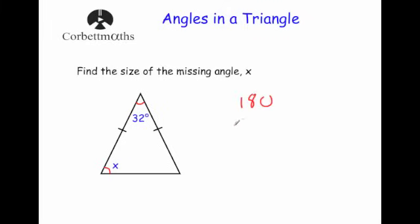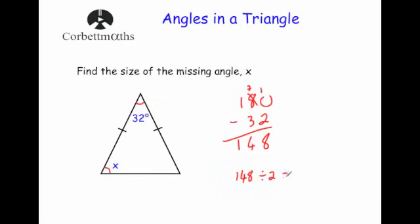So I do 180 take away 32. Zero take away two — I need to borrow: 10 take away 2 is 8, 7 take away 3 is 4, 1 take away 0 is 1 — giving me 148 degrees for both base angles combined. Because they're equal, I halve 148: 148 divided by 2 equals 74 degrees. So X equals 74 degrees. We can check: 74 plus 74 is 148, plus 32 gives 180. Correct.